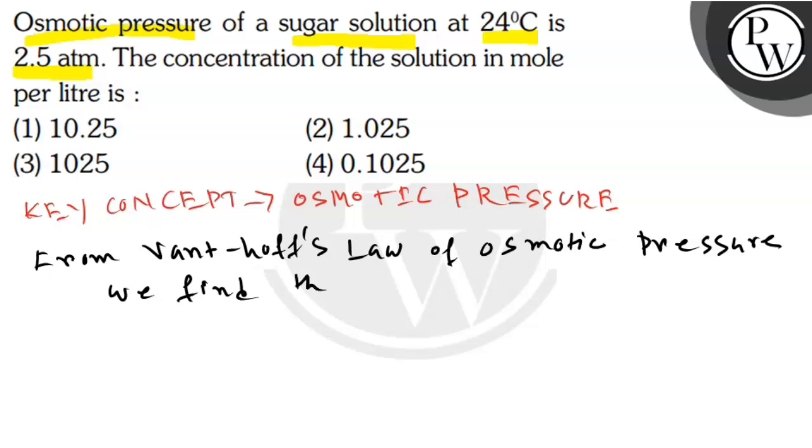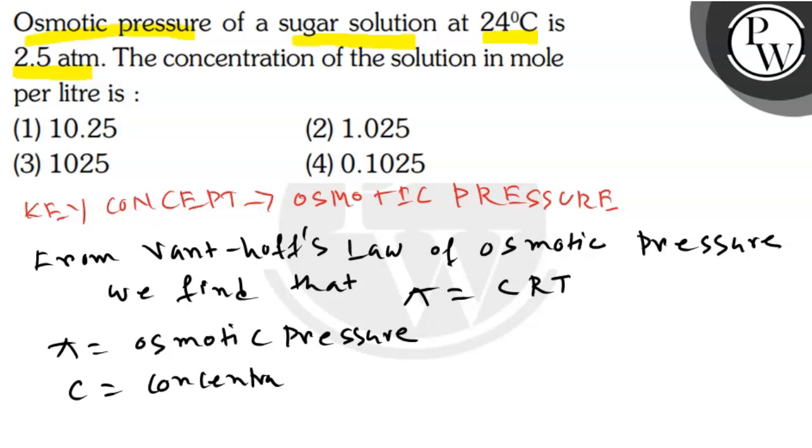Where π is the osmotic pressure, C is the concentration, R is the universal gas constant, and T is the absolute temperature.